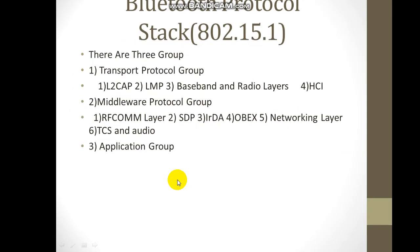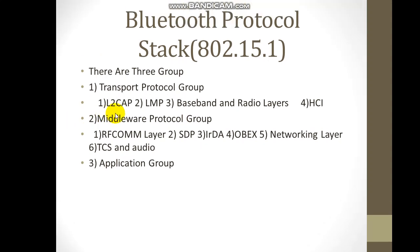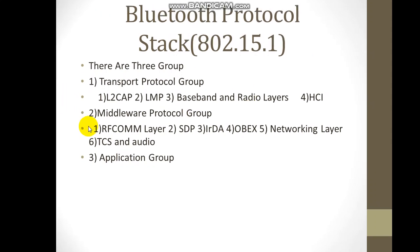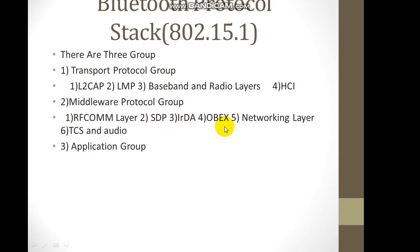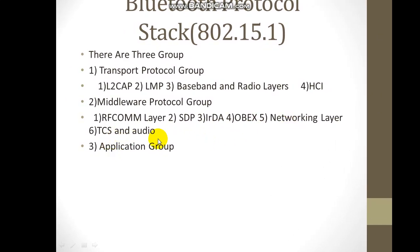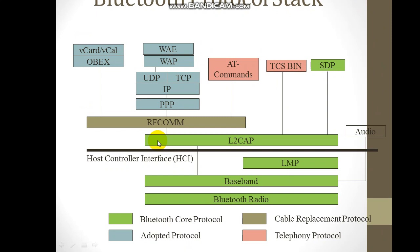Now let's look at the Bluetooth protocol stack at IEEE 802.15.1. There are three groups: the transport protocol group, the middleware protocol group, and the application group. The transport layer includes LMP (Link Management Protocol), baseband, radio, and HCI. The middleware includes RF communication, SDP, IrDA, OBEX, and the network layer. The third group is the application layer.